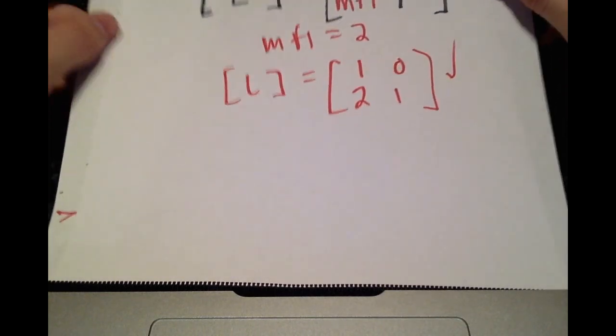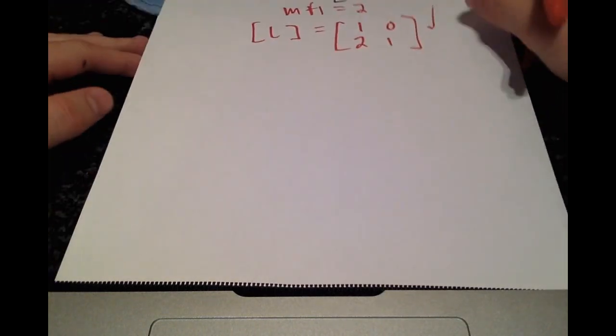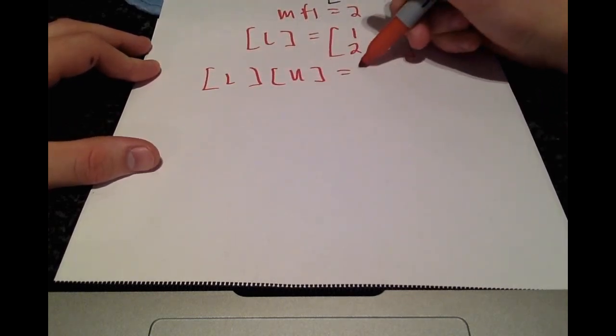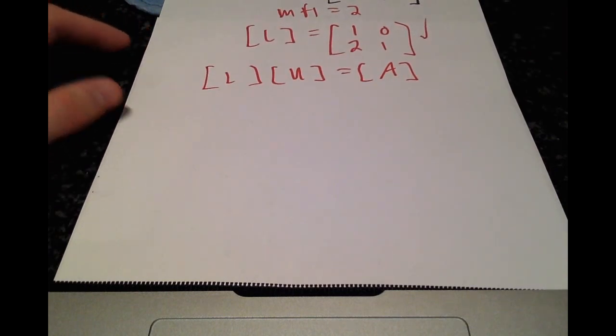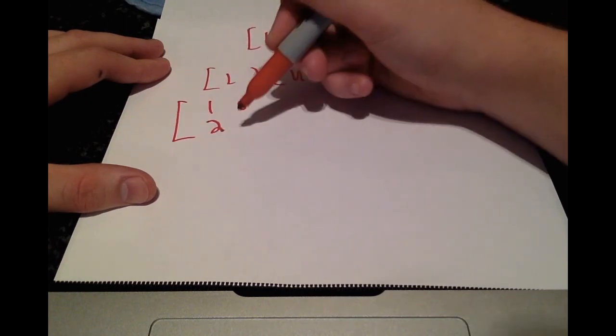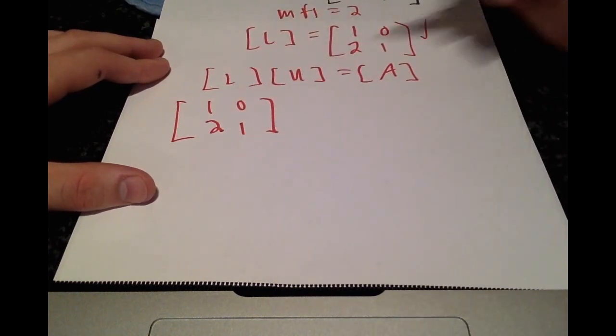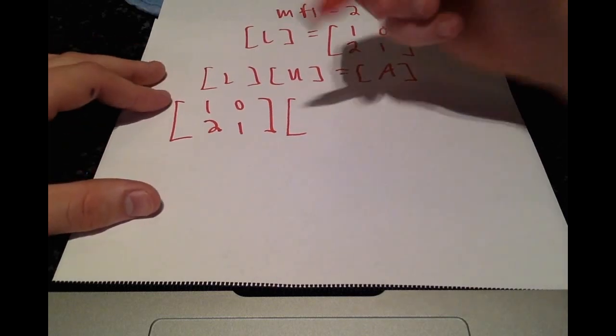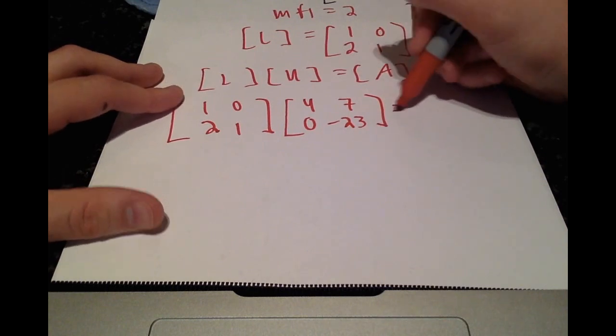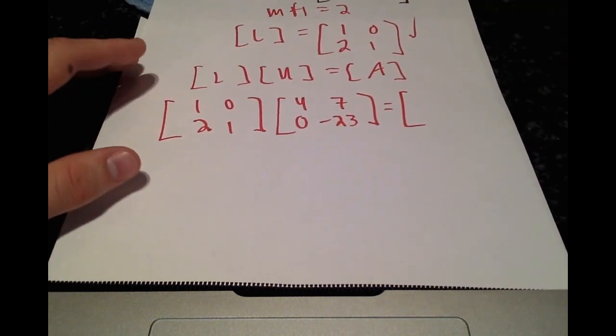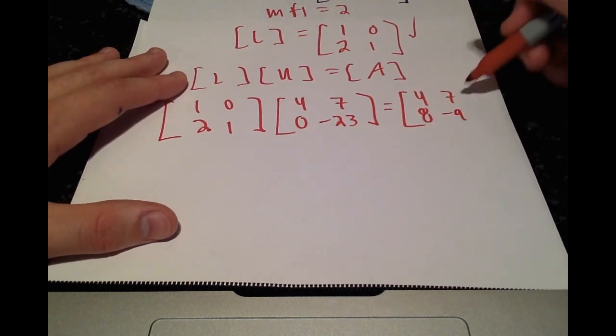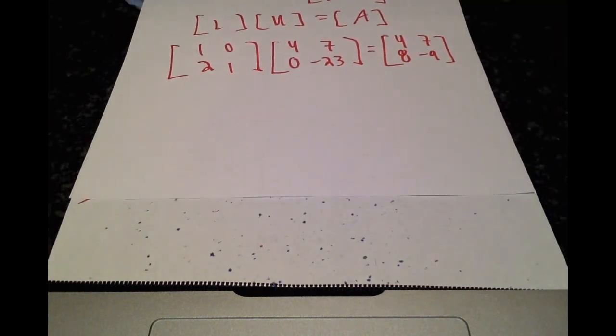And then now what we're going to want to do is check that L times U is equal to A. Okay? So filling in those values, we have 1, 0, 2, 1 multiplied by 4, 7, 0, negative 23 is equal to our original coefficient matrix A. 4, 7, 8, negative 9. Okay.